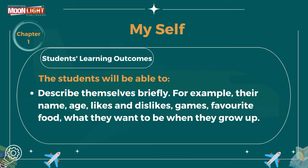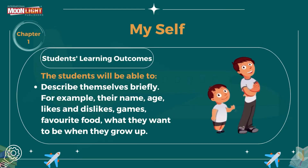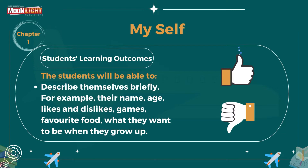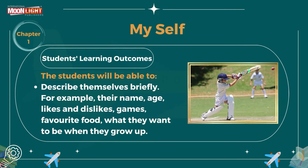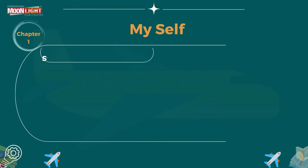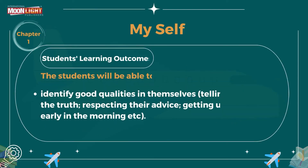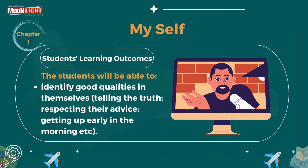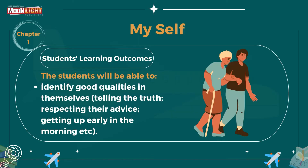First of all I will tell you about the student learning outcomes. After completing this chapter the student will be able to: number one, describe themselves briefly, for example their name, age, likes and dislikes, games, favorite food, and what they want to be when they grow up. Number two, identify good qualities in themselves, such as telling the truth, respecting elders,